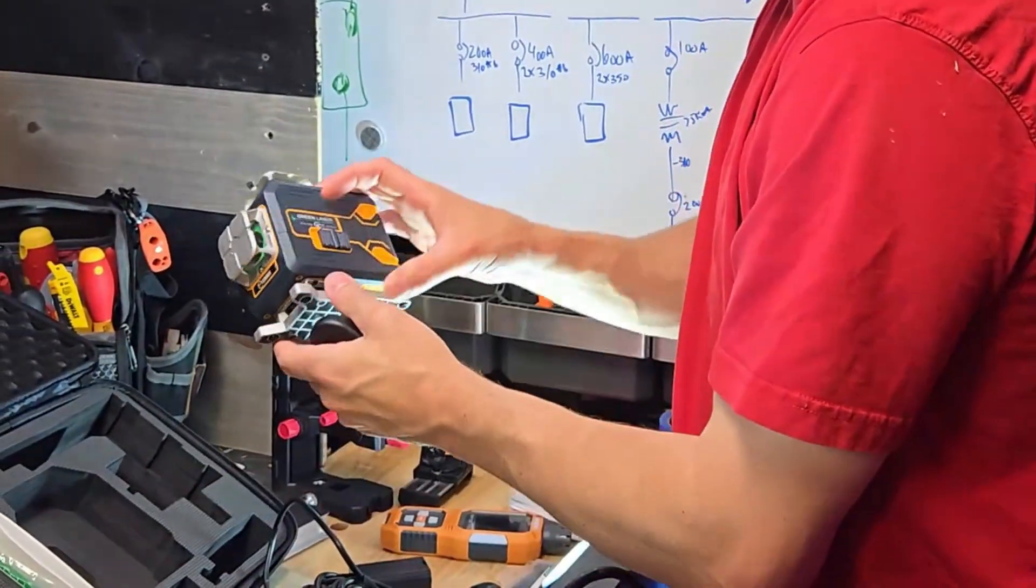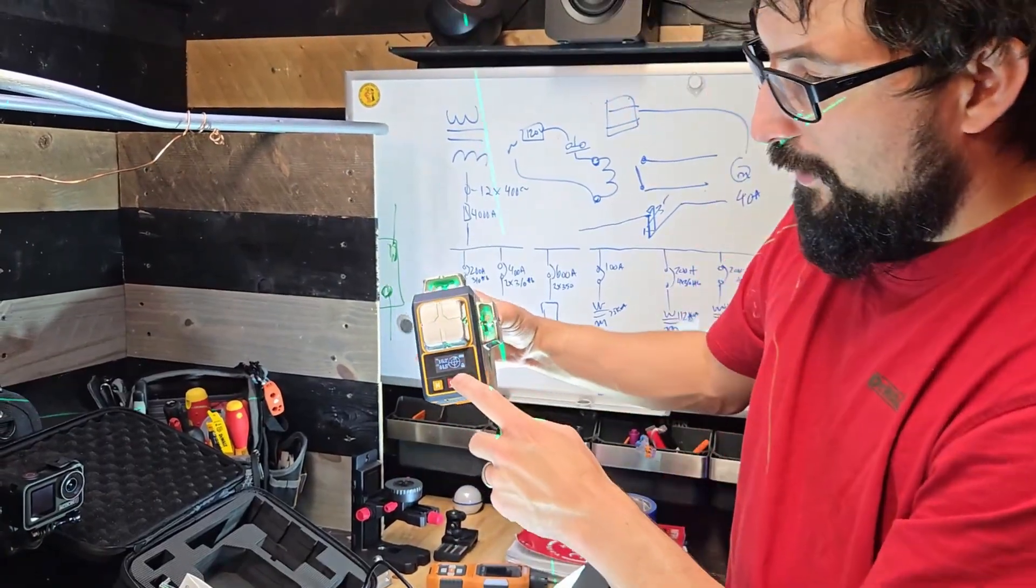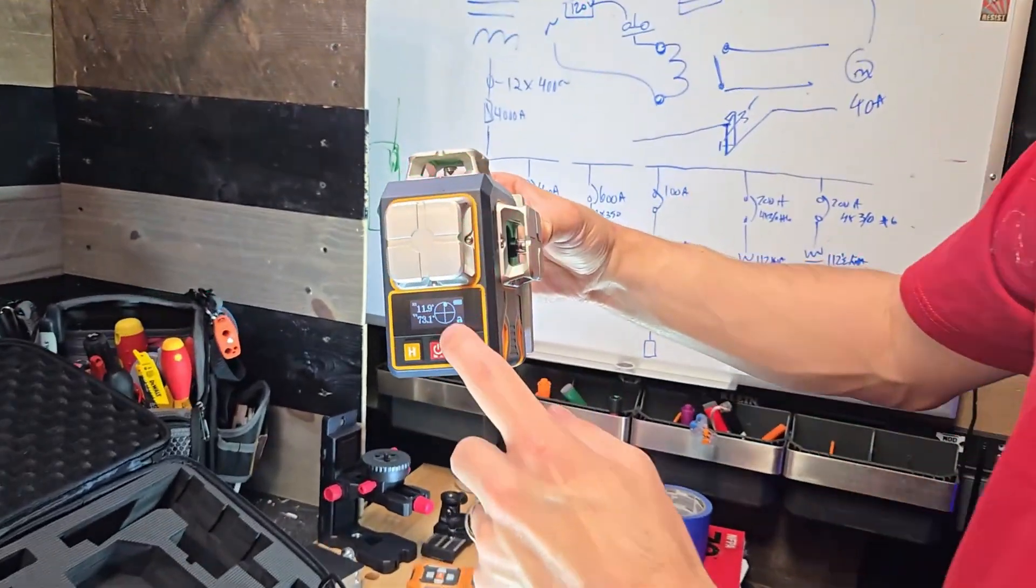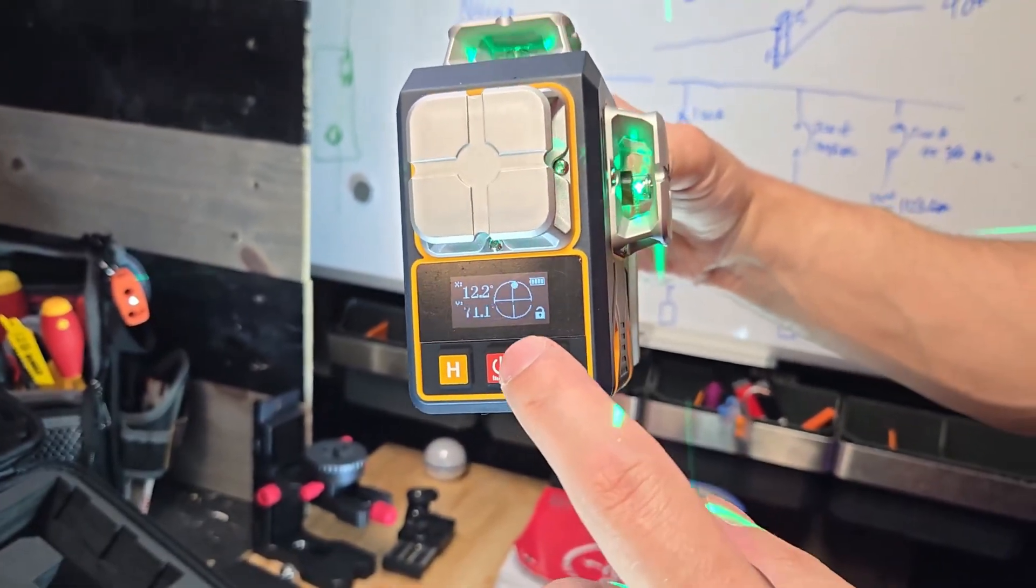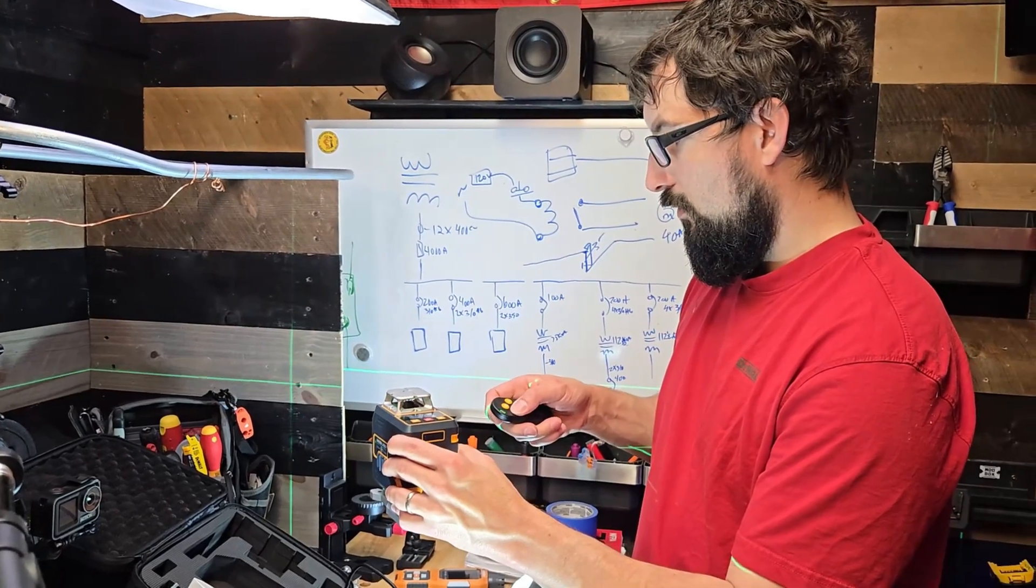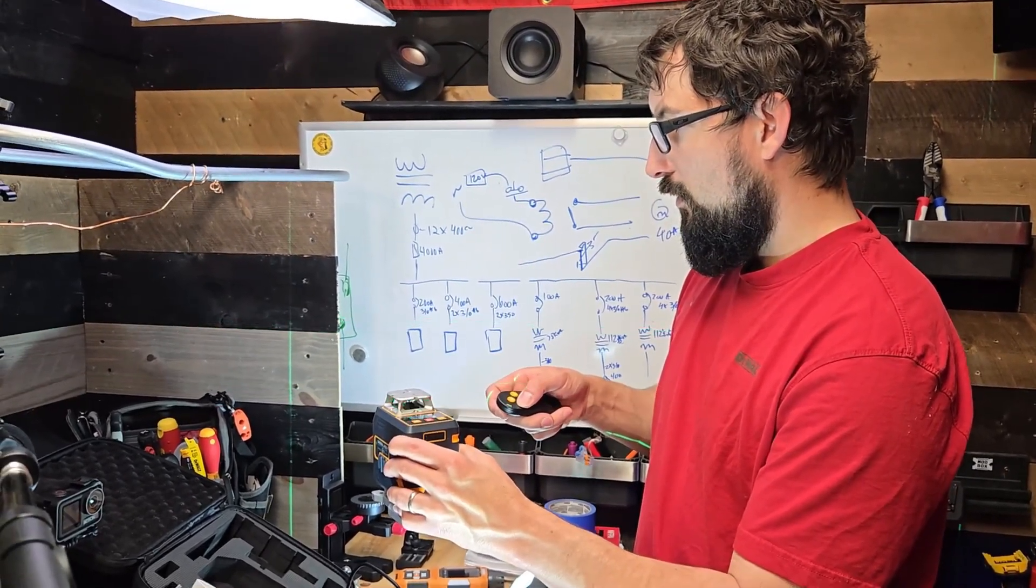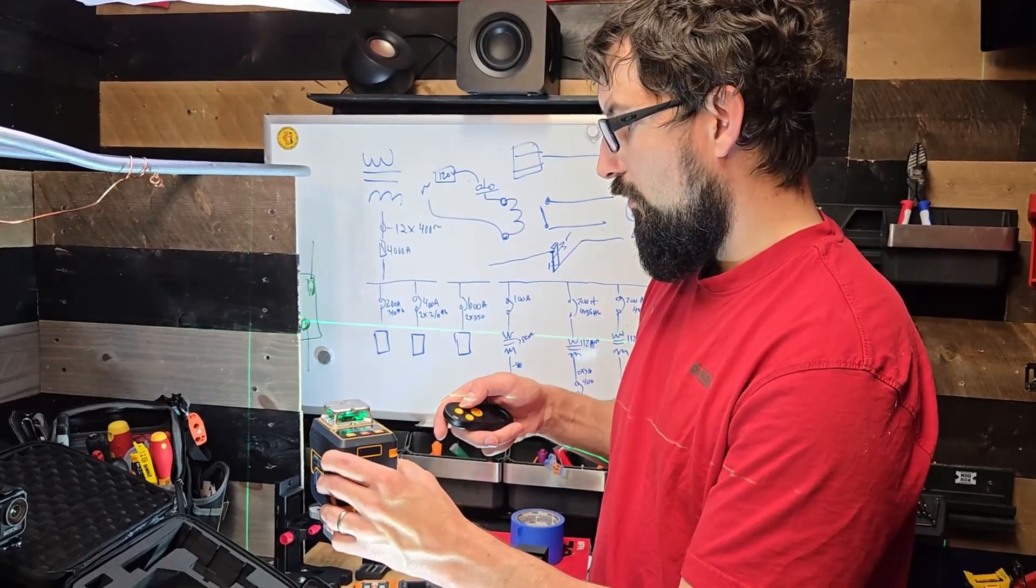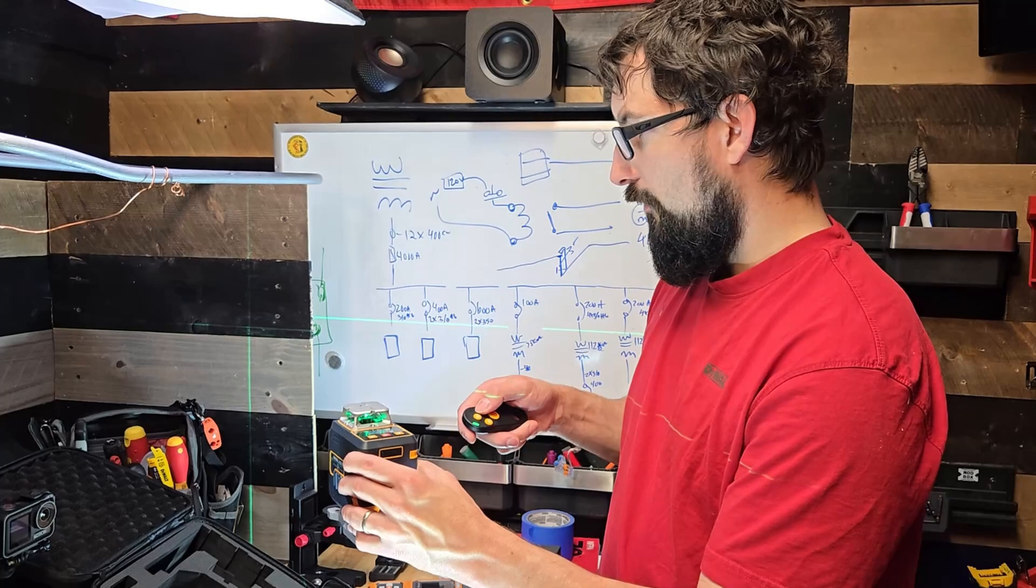And it's not the remote. This thing does have a remote, which is really cool. And it has a display here with the coordinates. So if your laser gets bumped, if you remember what your coordinates were, you're going to know that somebody bumped your laser on the job site, which is really cool. There's a remote there turning on and off that laser. It's got a lot of settings to go through.